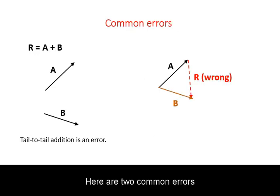Here are two common errors involving adding vectors. The first common error is drawing the vectors tail-to-tail and then drawing the resultant vector between their heads. We have just seen that this will actually give you B minus A.